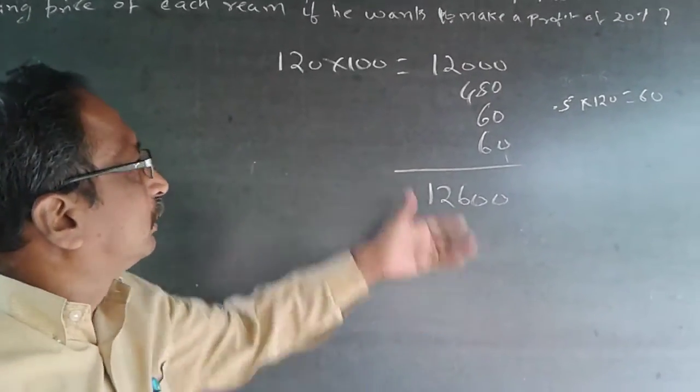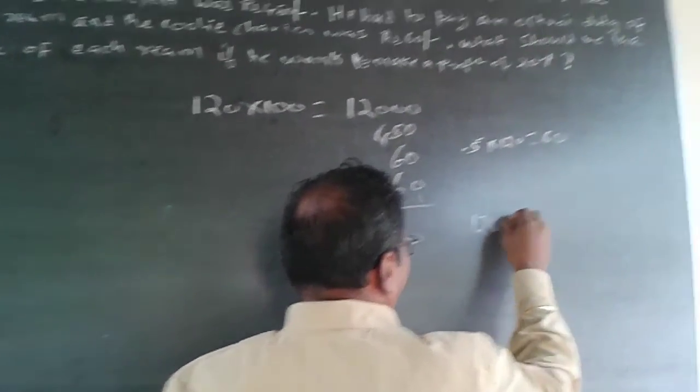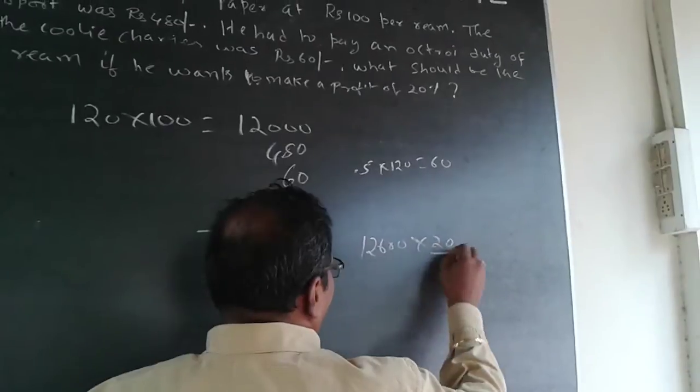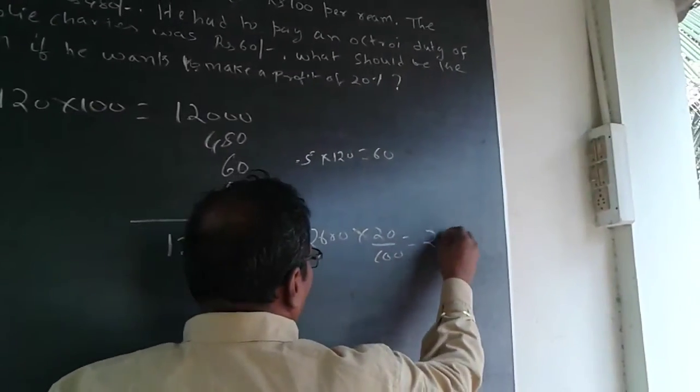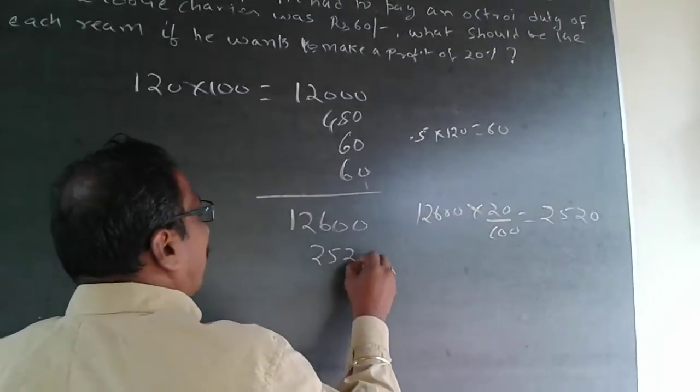On this 12,600, he has to make a profit of 20%. So 12,600 into 20 by 100 will be equal to 2,520. This 2,520 will be the profit which has to be added to the cost.